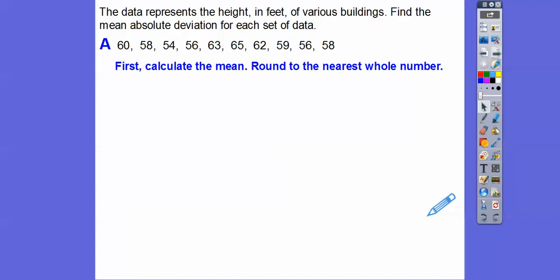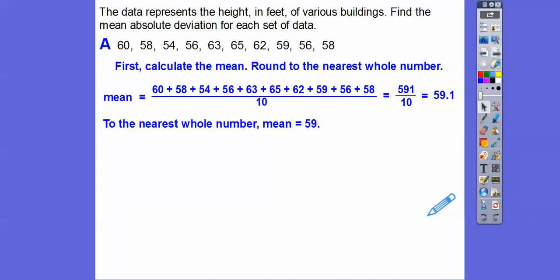We're going to round it - we're going to get decimals. So, hopefully everybody has calculators. Add up, there's 10 numbers there. Add them up and divide by 10. I'm just saving some time right there. We get 591 divided by 10, which is 59.1. So, to the nearest whole number, it's going to be 59. So we're going to use that as our mean.